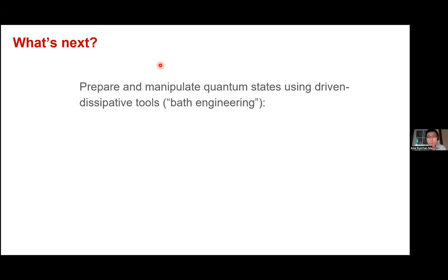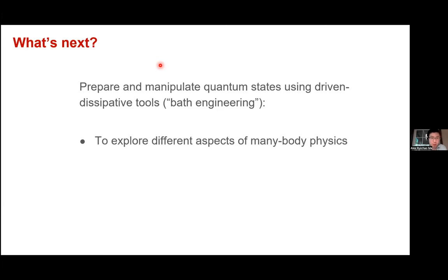Let me pause briefly in case there are any questions — I do have plenty of time and I'll talk about what's coming up next: what can we do along these lines of research and what we're working on in the lab right now. Generally speaking, we want to apply driven dissipative tools to two places: one is to explore different aspects of many-body physics — looking at interesting condensed matter models and maybe also high-energy physics models — to do quantum simulation experiments. And of course, at the same time, if you can prepare and manipulate entanglement or quantum correlations, then you can use the same system to explore applications for quantum information science.